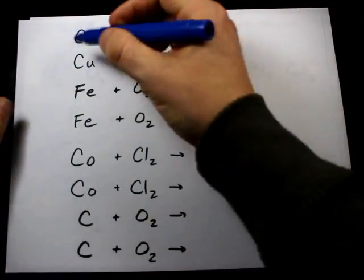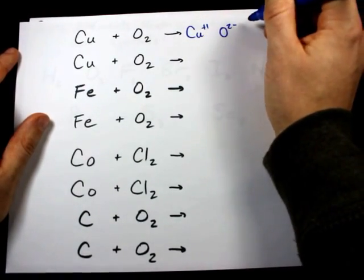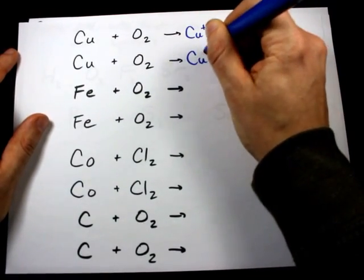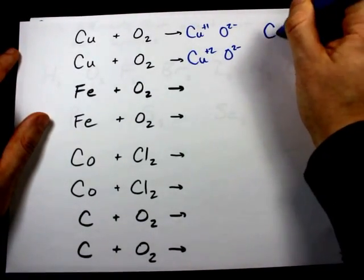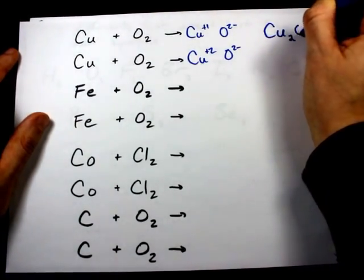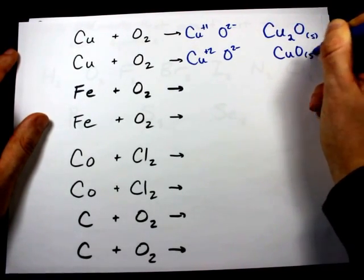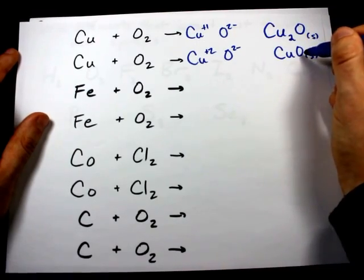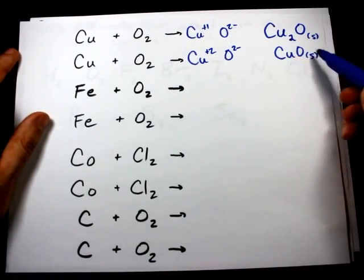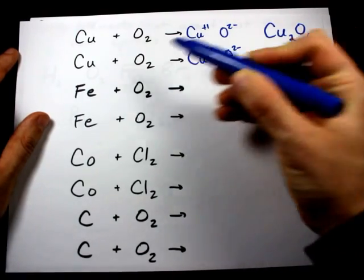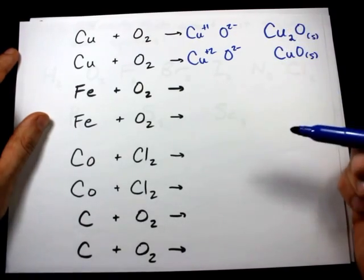Anyways, copper can be plus 1, oxygen is always minus 2, copper can also be plus 2, and oxygen minus 2. When you crisscross these, it gives you two possible answers. One is Cu2O and one is CuO, both solids because they're both metal, non-metal ionic compounds. Both of these are acceptable. This is what is made if there is enough oxygen around, and if there isn't enough oxygen, it makes this less oxidized form.